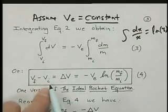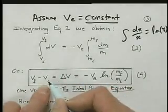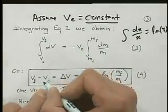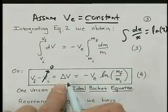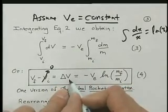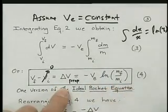Now on the left, we have V final minus V initial. We can assume that the initial value is zero. And so what we get is the delta V of our propulsion system that we've been talking about.